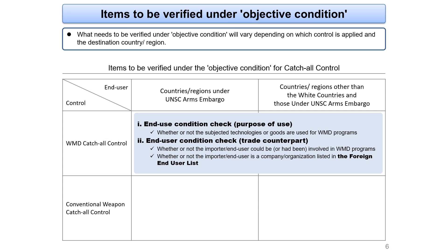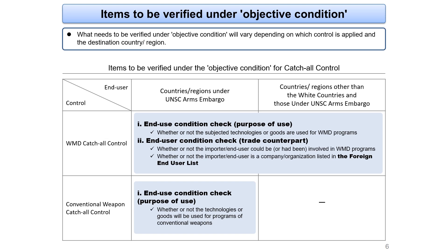METI lists organizations such as enterprises or universities concerned to be involved in WMD programs as the foreign end-user list, published on the METI website. If you intend to transfer technologies or export goods to an organization listed in the foreign end-user list, a license application is required unless it is obvious these technologies or goods will not be used for WMD programs. For conventional weapon catch-all control applied to non-white destinations, you need to verify the end-use condition — whether the technologies or goods will be used for programs of conventional weapons in the destination.